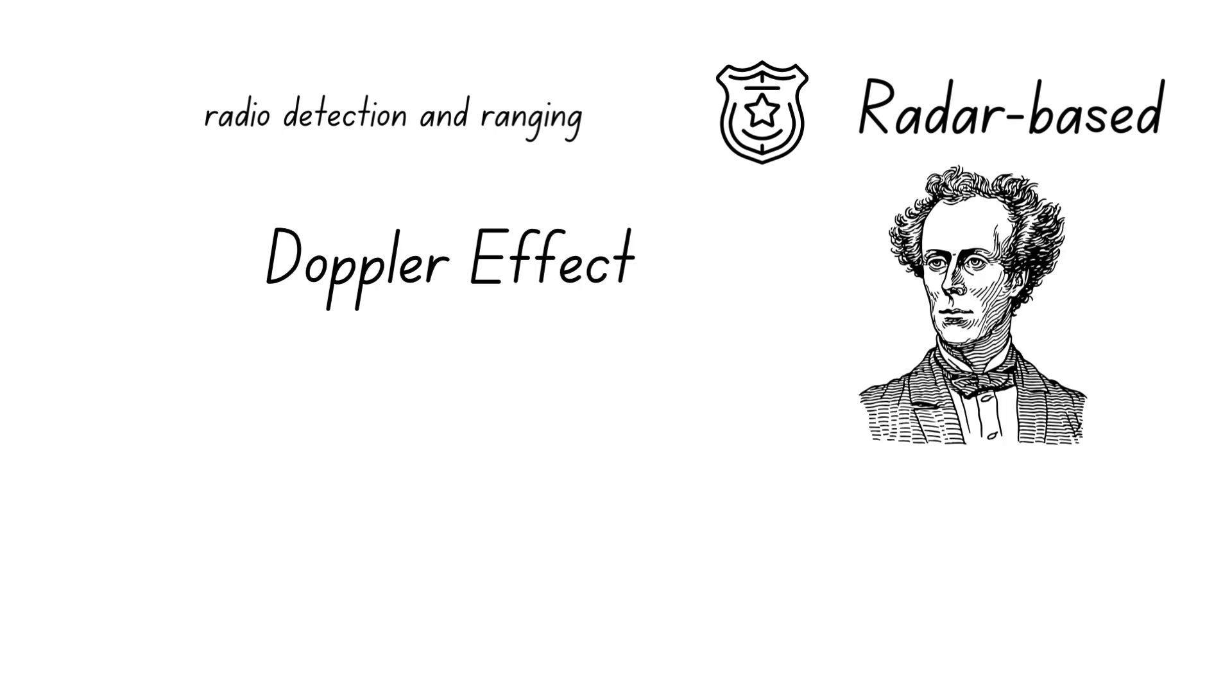Let's start with radar speed guns, the most common type used by law enforcement. Radar stands for radio detection and ranging. This gun operates on the Doppler effect,